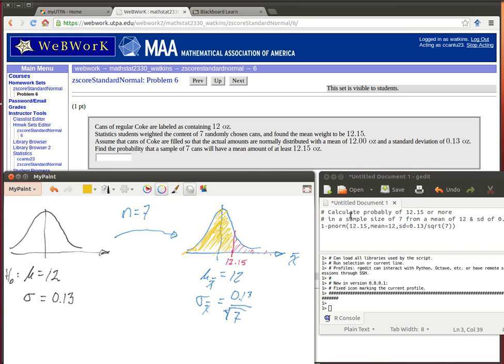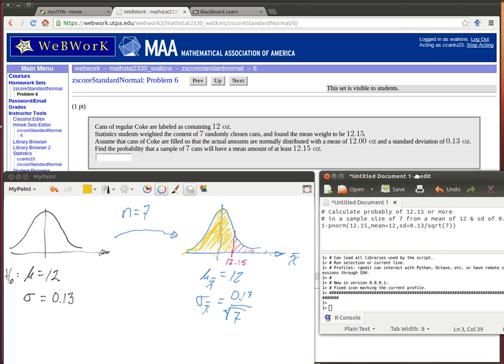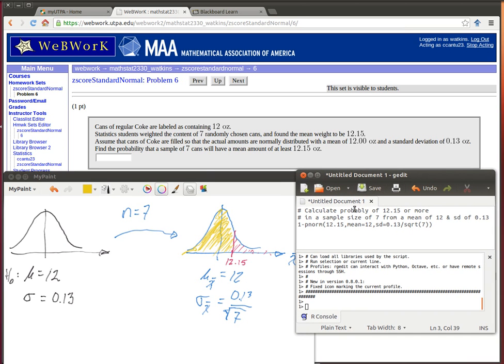So here I'm doing the calculation. I'm using my script editor here so that I can keep notes on what I'm doing. Calculate the probability of 12.15 or more in a sample size of 7 from a mean of 12 and a standard deviation of 1.13. I wish I had it said with a mean instead of from.